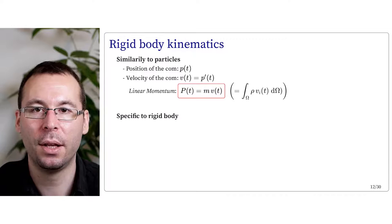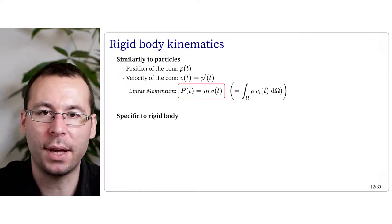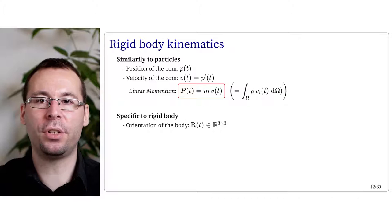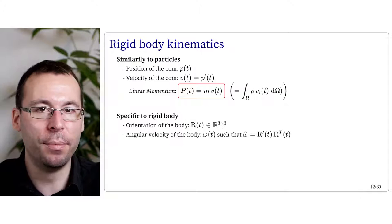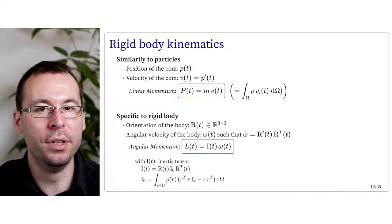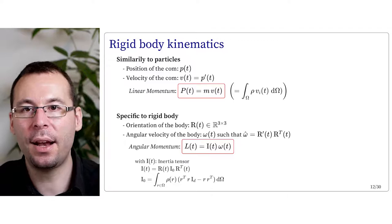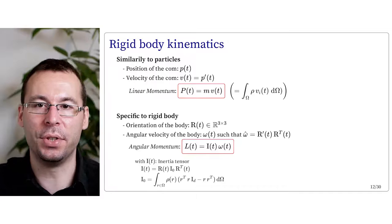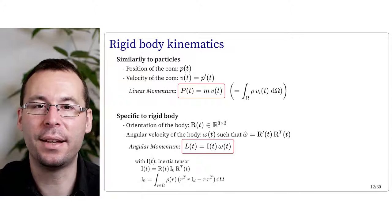There is another quantity specific to the rigid body, related to its orientation. The orientation is described by rotation matrix R(t) with angular velocity omega(t), such that omega-hat equals R times R transposed. The second fundamental quantity preserved in an isolated system is the angular momentum L(t), which equals some matrix I(t) times the angular velocity. I(t) is called the inertia matrix.